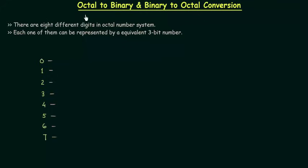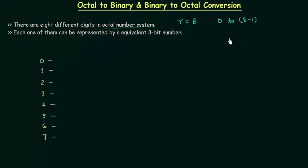In this presentation we will learn octal to binary and binary to octal conversion. There are eight different digits in the octal number system. The base in the case of octal number system is equal to 8, so r equals 8, and hence we have 0 to 8 minus 1 different digits — that means 0 to 7.